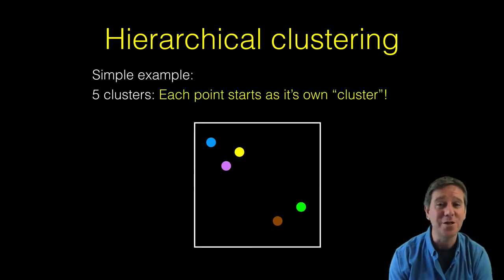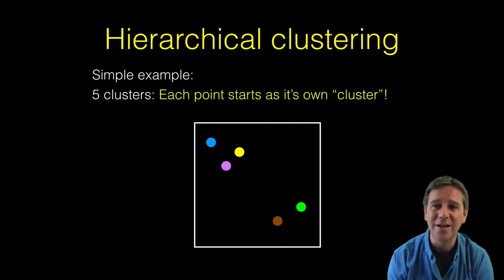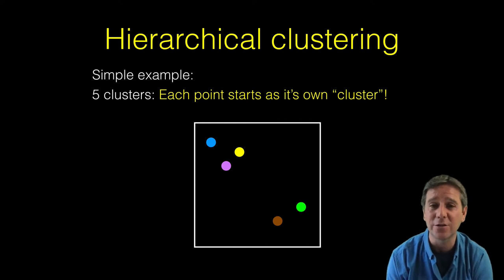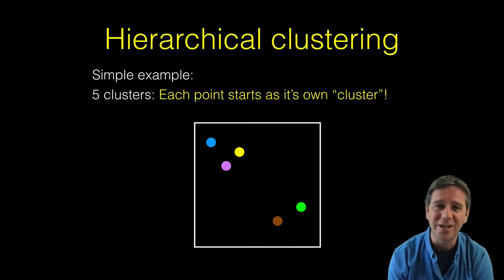With bottom-up, we start at the bottom with each data point considered initially as a cluster on its own. For example, here in the graphic, I have five data points. We're going to start with each of these five points as its own initial cluster - five clusters total, as many as we have data points. Then we're going to go up and group these things together, merge or link them, to reveal structure in our data.